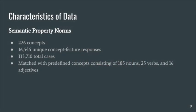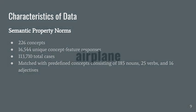The semantic property norms dataset includes labeled and lemmatized responses for a number of concept feature tasks. As an example of a prompt, the participant might see the word 'airplane.' They would then respond by typing other words that came to mind in association with that word, such as fly, travel, expensive, scary.